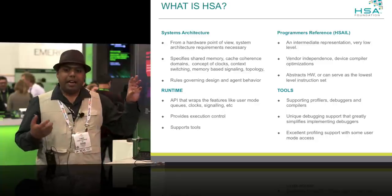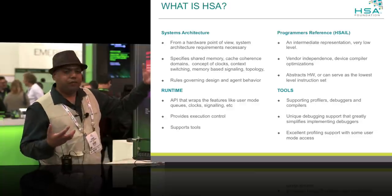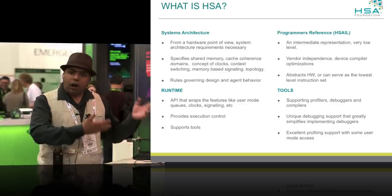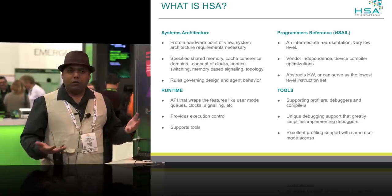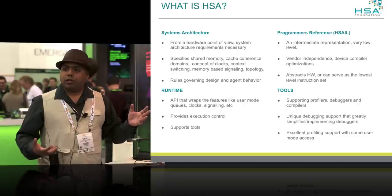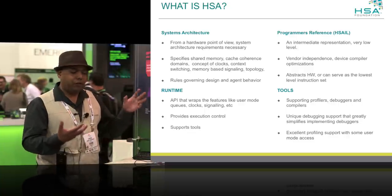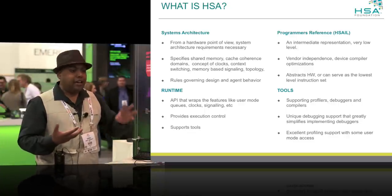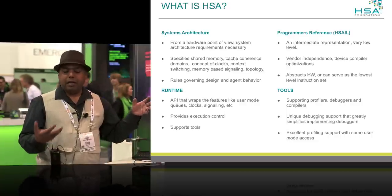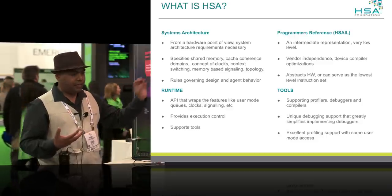The runtime API wraps the system architecture features through a very lightweight mechanism. It gives you the ability to create user mode queues. It has API to control execution — you have ability to control individual kernels and launch a kernel and then control its execution. It has API to support different tools like profilers and debuggers, and this API is being defined by the runtime working group.